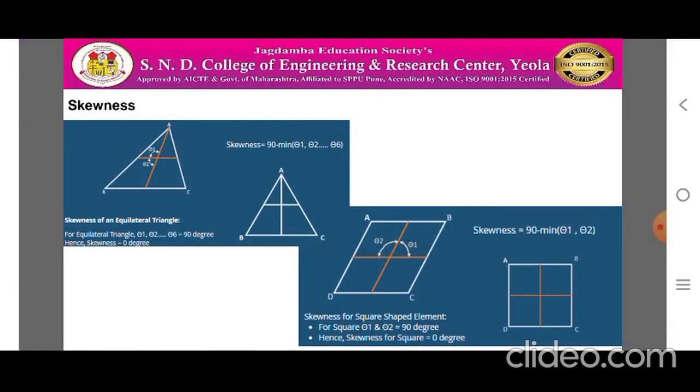In skewness, skewness is an angular measure of element quality with respect to the angles of ideal element types. It is one of the primary quality measures of finite element mesh. Skewness determines how close to ideal a face or cell is. There are two different methods for calculating the skewness for 2D elements: angular measure method and normalized measure method. The figure shows the skewness for equilateral triangle as well as square shaped element. For equilateral triangle theta1 theta2, the skewness is equal to 90 degrees and skewness is equal to 0. The skewness is defined for triangular shape as skewness equals 90 minus minimum of theta.